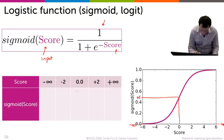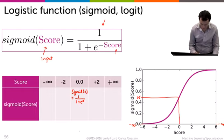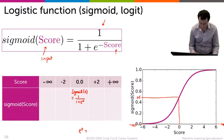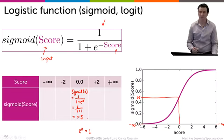So if I compute the sigmoid of zero, that is 1 divided by 1 plus e to the zero. And as a little cheat sheet here at the bottom, e to the zero is exactly 1. So that's good. So this is 1 divided by 1 plus 1, which is equal to 0.5. QED.